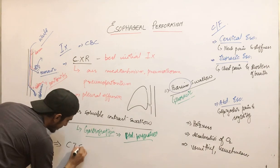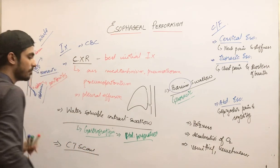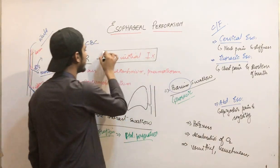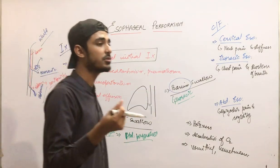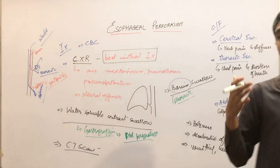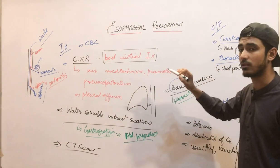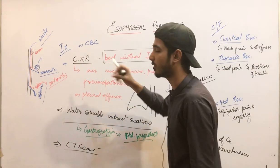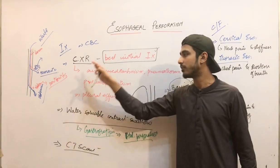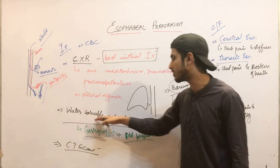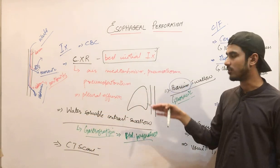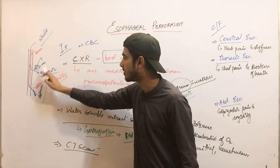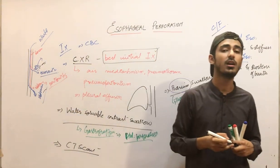The best investigation overall is CT scan. However, the best initial investigation is chest X-ray because the patient may have very little time and you must diagnose quickly. After chest X-ray, contrast imaging helps confirm the site — widening in the abdominal or thoracic area confirms the type of perforation.